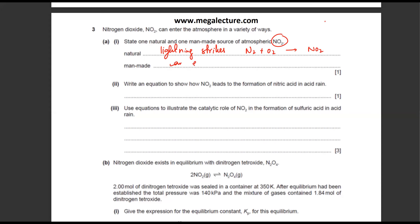The man-made source is car engines. In car engines, a lot of combustion is happening, the air heats up, and the nitrogen and oxygen in the air react together to form NO2. However, this reaction has a very high activation energy, so you need high temperatures, which you get either in car engines or in lightning strikes.